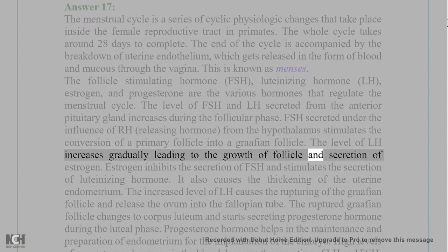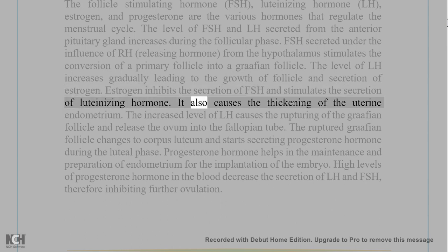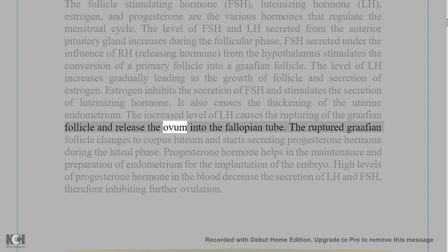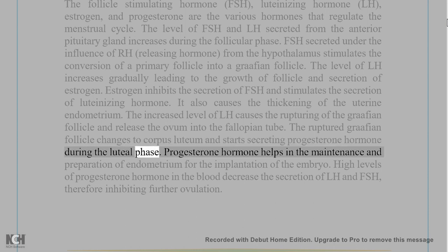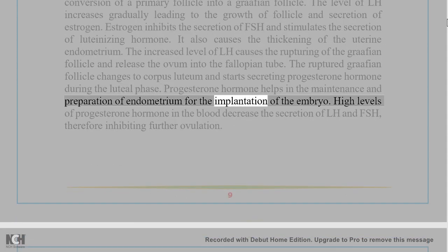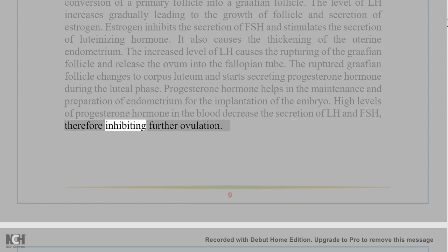The level of LH increases gradually, leading to the growth of follicle and secretion of estrogen. Estrogen inhibits the secretion of FSH and stimulates the secretion of LH. It also causes the thickening of the uterine endometrium. The increased level of LH causes the rupturing of the Graafian follicle and releases the ovum into the fallopian tube. The ruptured Graafian follicle changes to corpus luteum and starts secreting progesterone during the luteal phase. Progesterone helps in the maintenance of endometrium for implantation of the embryo, and high levels inhibit further secretion of LH and FSH, thereby preventing further ovulation.